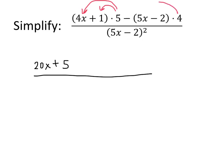Similarly, we want to distribute the 4 that's being multiplied by 5x minus 2. 4 times 5x is 20x, and 4 times 2 is 8.